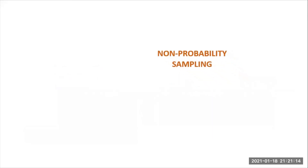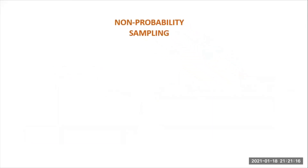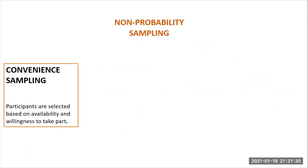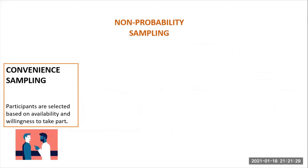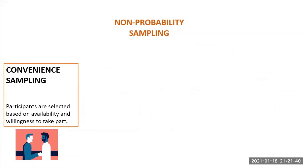For non-probability sampling, this is best used when doing qualitative research. Convenience sampling is perhaps the easiest method because participants are selected based on availability and willingness to take part. Useful results can be obtained, but the results are prone to significant volunteer bias, because those who volunteer to take part may be different from those who choose not to.